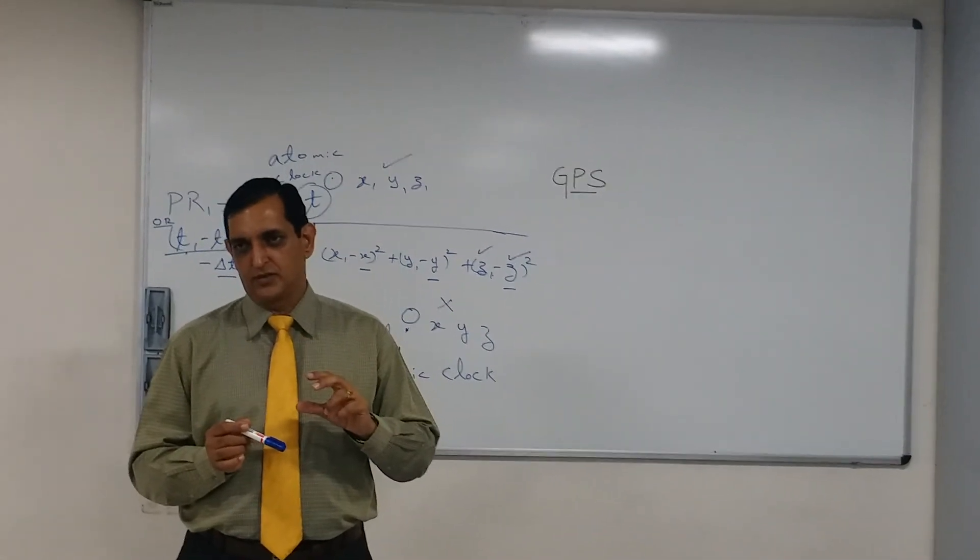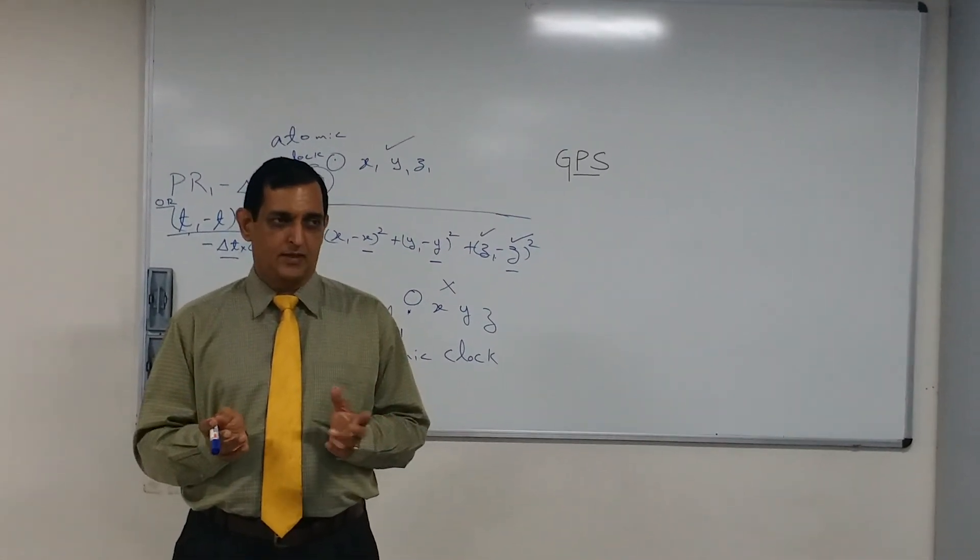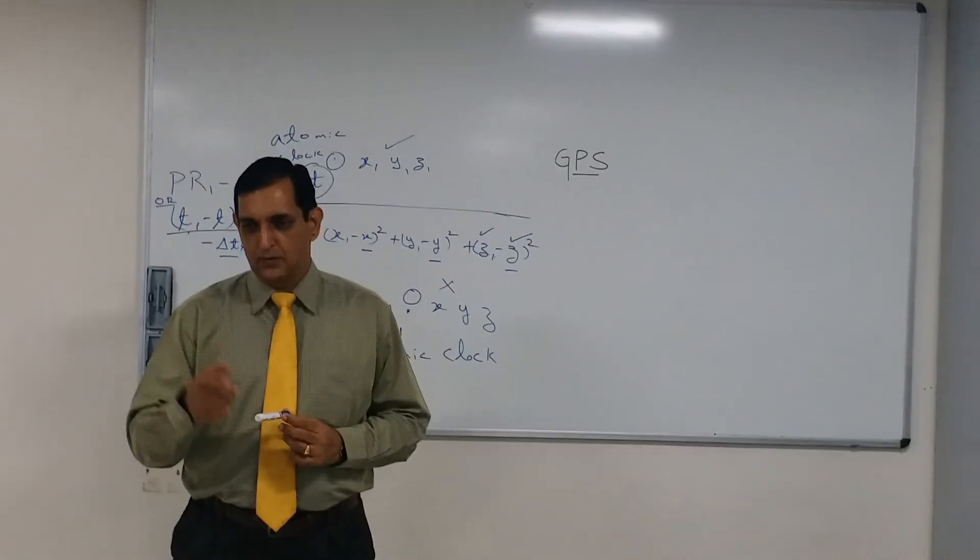It could be only a few meters, but it is there. That is the first one, ionospheric and tropospheric delay. What is the next one?